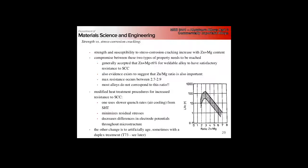I got this statement in here, decreases differences in electrode potentials throughout the microstructure. Does anyone have any idea what I meant? You've got particles in there of different compositions, so you can have galvanic corrosion between the reinforcing particles in the matrix.